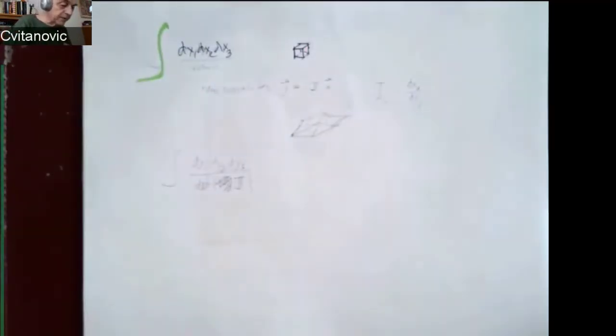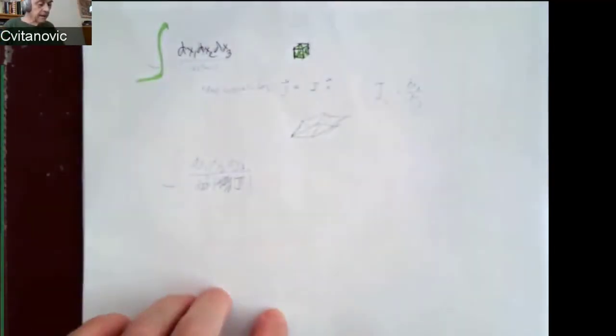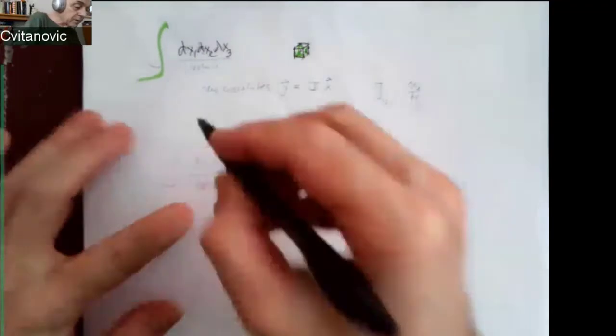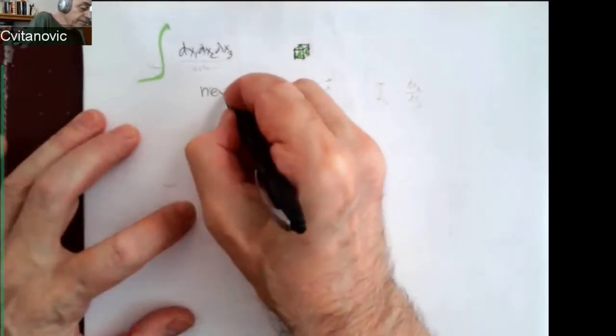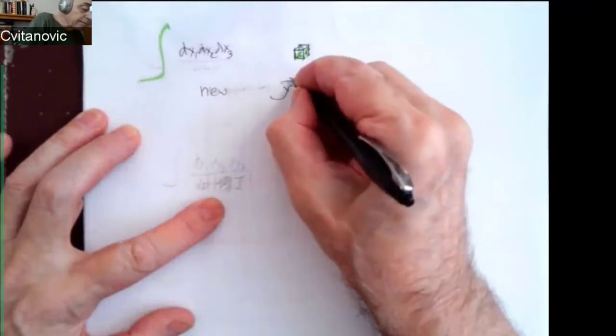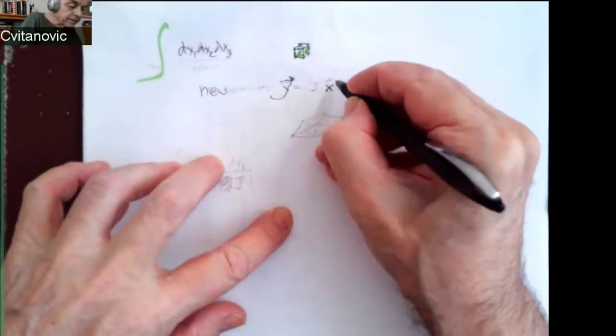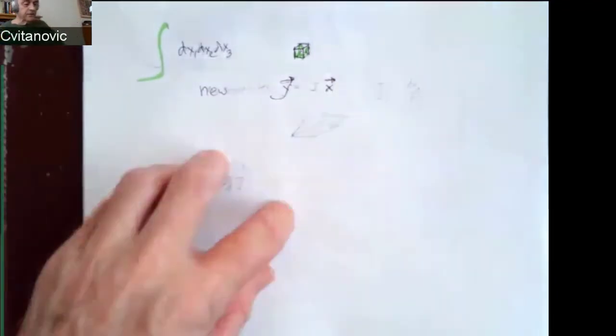Now we choose new coordinates. Let's call them Y. So every original point in the original state space in D dimensions vector X.